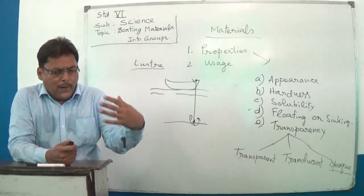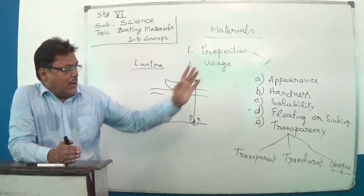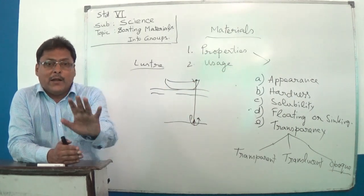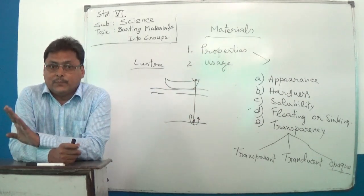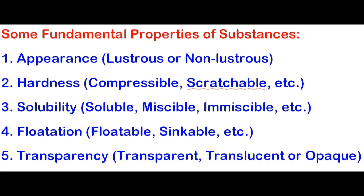Now let us look at some slides detailing these qualities. Some fundamental properties of substances: we classify them according to their appearance — whether they have lustre or do not. Lustrous or non-lustrous. Lustre in Hindi is 'chamak.' If you make ornaments, you should make them from lustrous metals like gold and silver, and from lustrous precious stones like diamonds.